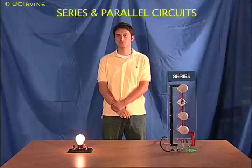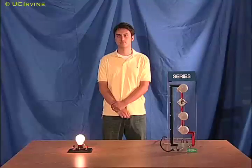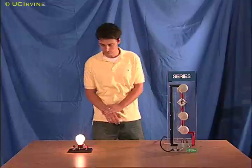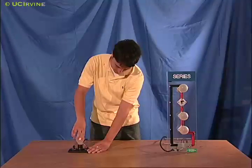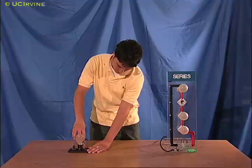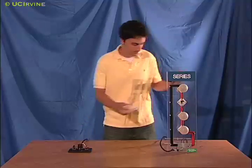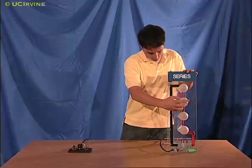Series and Parallel Circuits. The light bulb on the left is an ordinary 25-watt light bulb with a voltage of 120 volts across it. When Justin unscrews it, it goes out because the circuit is open.